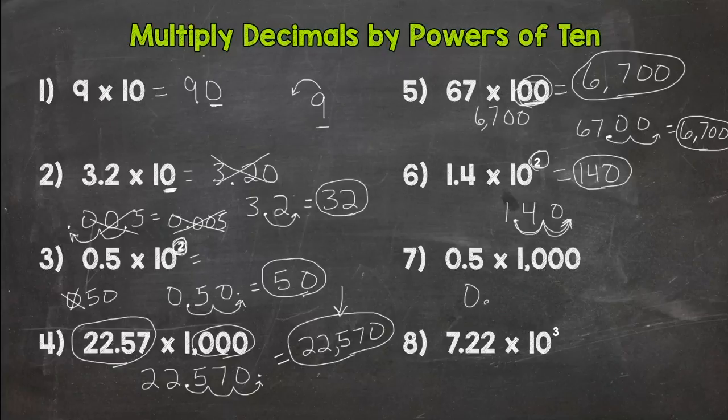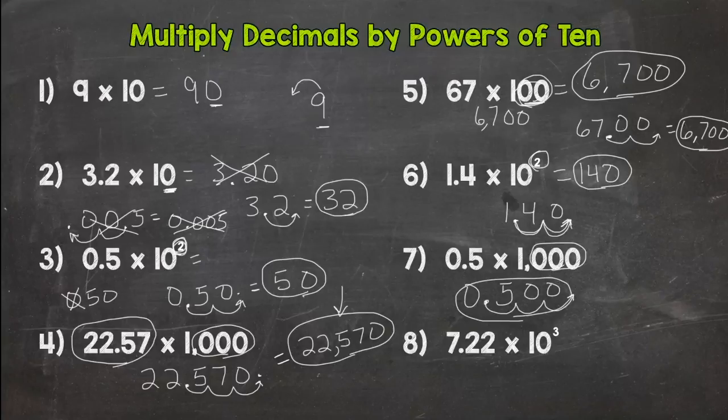Number 7. 5 tenths times 1,000. Three 0s. That means we move the decimal three times to push the 5 to the correct place value. 1, 2, 3. Fill with 0s. You don't want to circle this as your final answer. You don't want that line underneath. You want to rewrite the answer in standard form. Nice and clean number here. 500.